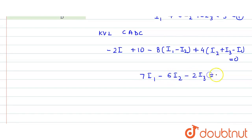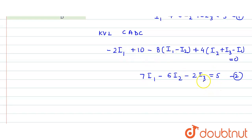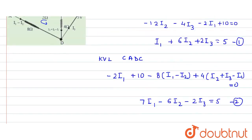We can also divide Equation 2 by 2 to simplify. We have three variables — i1, i2, and i3 — so we need a third equation.